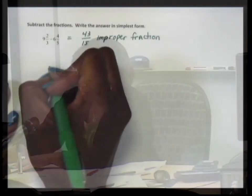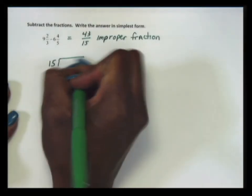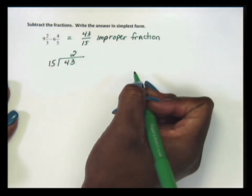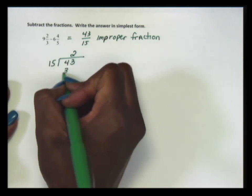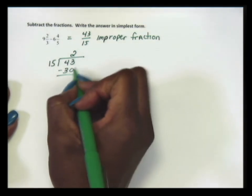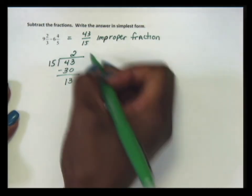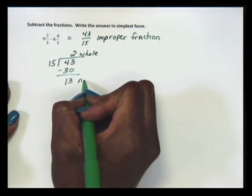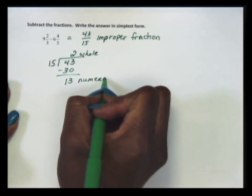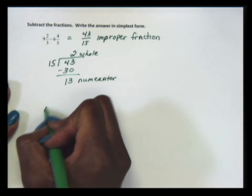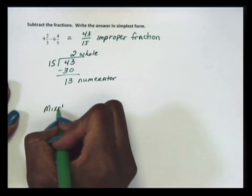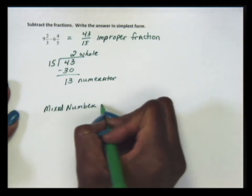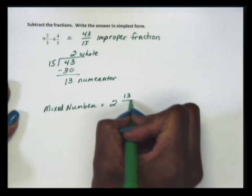So we have 43 over 15. We'll take 15 and divide into 43. 15 will divide into 43, 2 times evenly. 2 times 15 is 30. We'll subtract 30 from 43, which gives us 13. So 2 is our whole number of the mixed number, and 13 will be the numerator. Our final mixed number answer is 2 and 13 over 15.